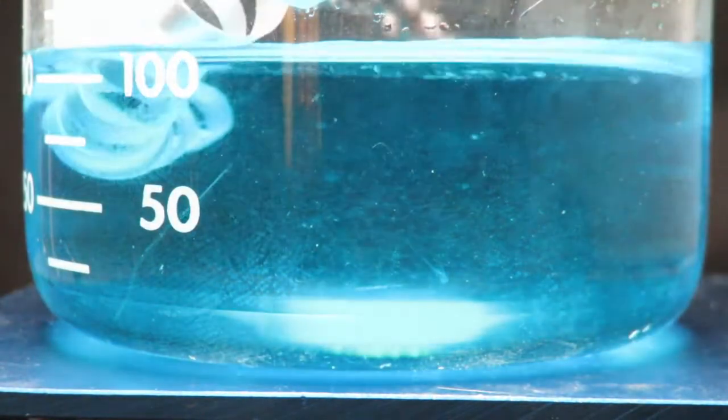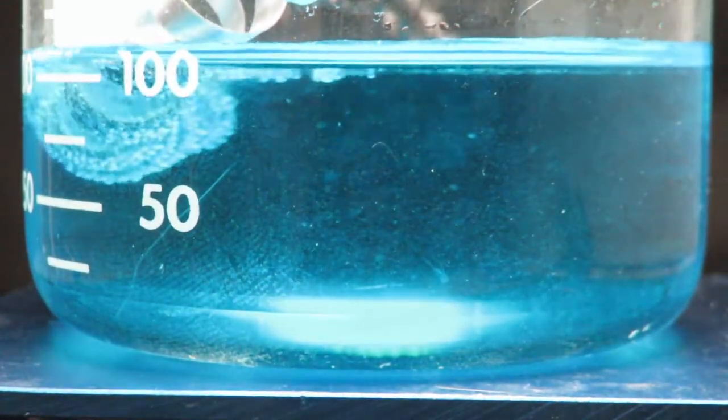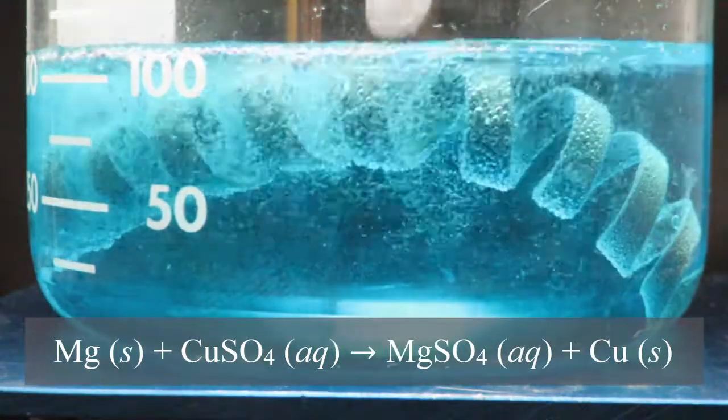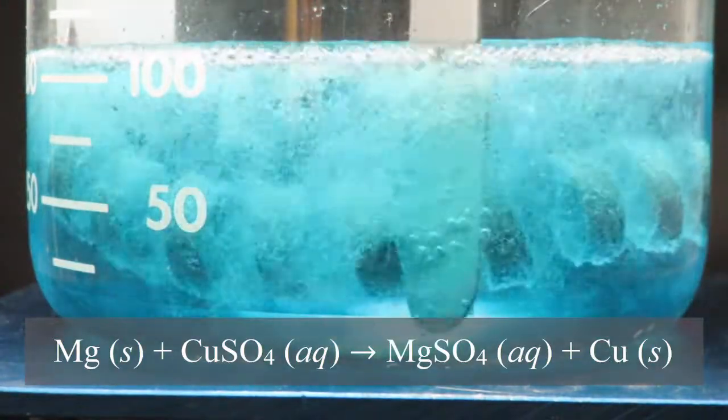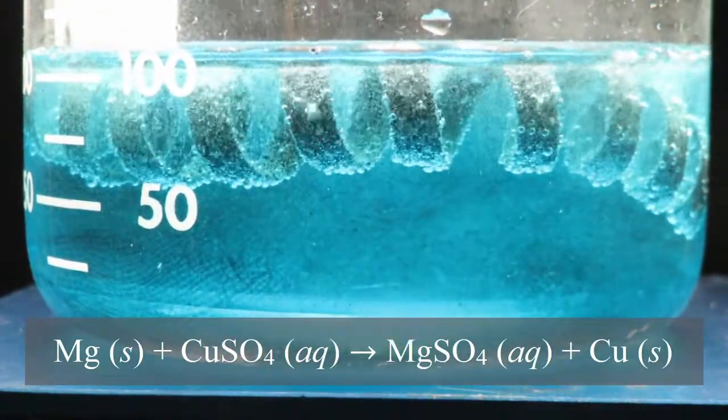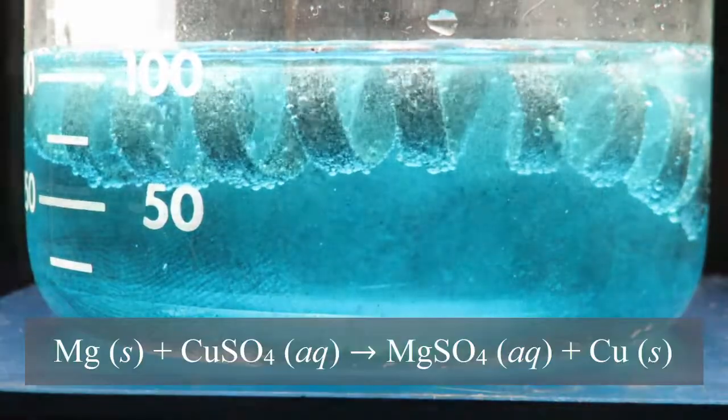So we put the magnesium metal in with the copper sulfate solution, that's CuSO4 aqueous, and the reaction starts right away. And because magnesium is a more active metal than copper, it can replace the Cu in the CuSO4 solution.